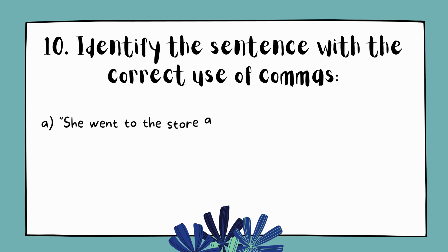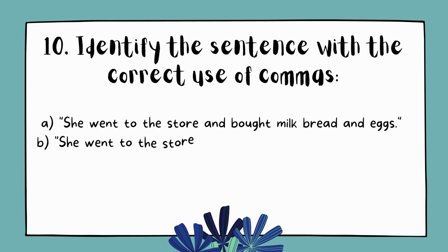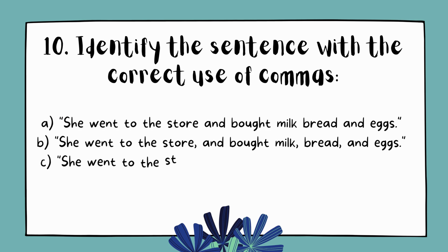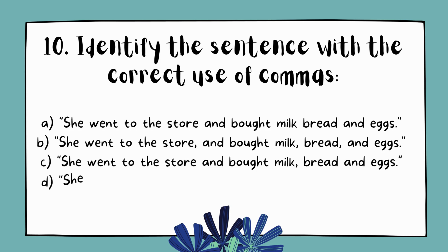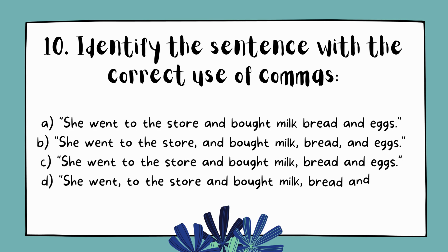Question 10. Identify the sentence with the correct use of commas. A. She went to the store and bought milk, bread, and eggs. B. She went to the store and bought milk, bread, and eggs. C. She went to the store and bought milk, bread, and eggs. D. She went to the store and bought milk, bread, and eggs.